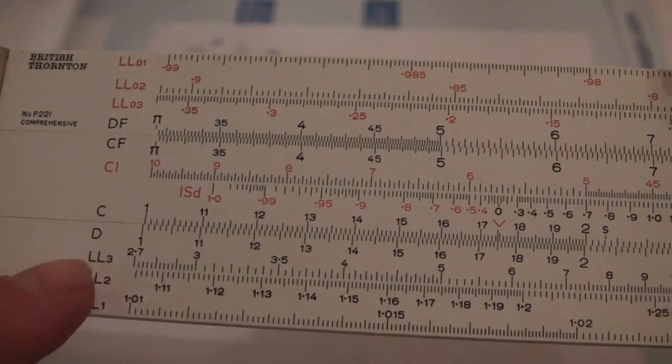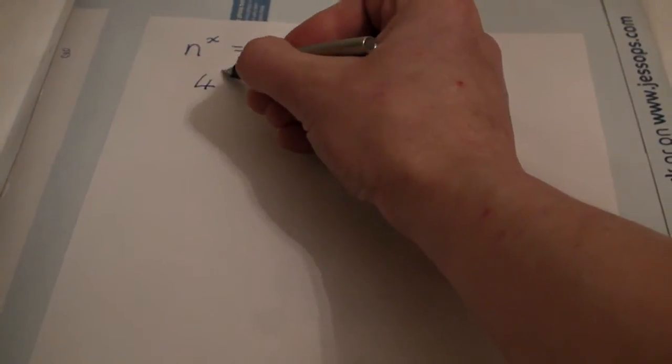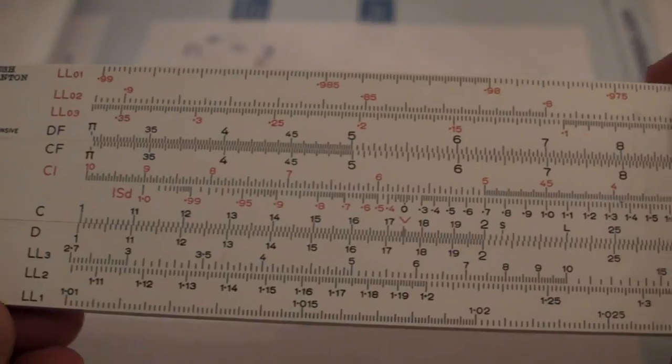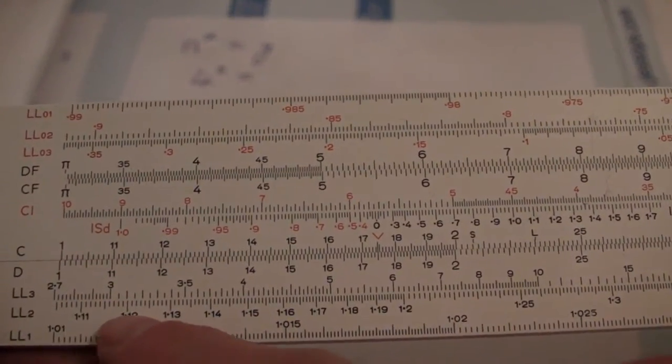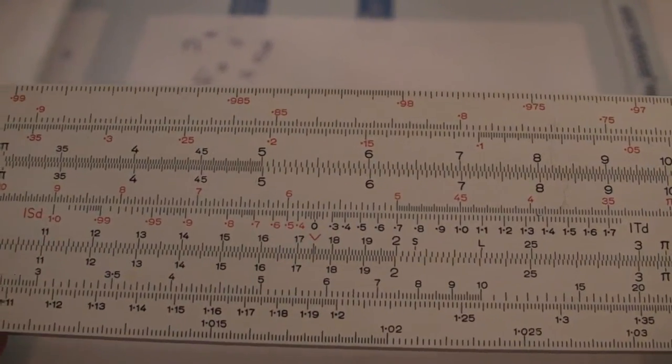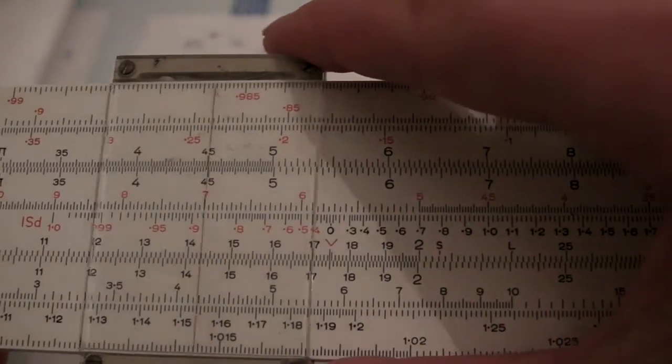If you want to do higher powers than 2 or 3, you need these scales here. I'll show you an example. If we take 4, and we want to work out 4 cubed, we look at this scale here. You can see it runs from 1.01 all the way up and along, and then back and starts again at 1.11, runs all the way along there, goes up and up and up to 2.7, up and up to about 20,000. That's where we set our n number. So we'll find our 4. You can see that here on LL3. So we'll move the cursor there to 4.